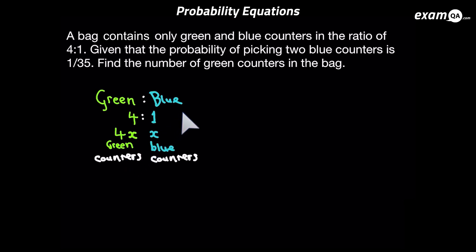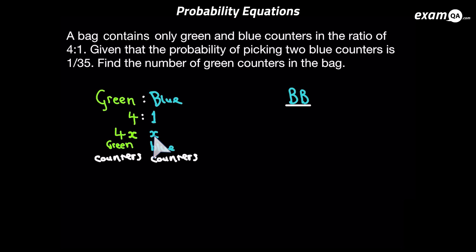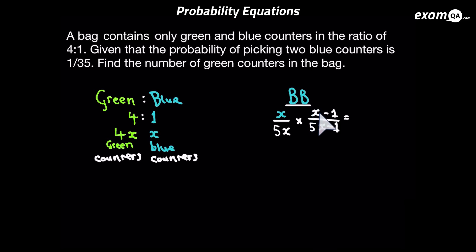Remember, with all these probability equations we need to be talking about amount of counters. Since the question has told us the answer for picking two blue counters, we're going to make an equation about that. We need to pick a blue counter first — there's x amount of blue counters, and the total is 4x plus x which is 5x. So the probability of picking the first blue counter is x over 5x. Now we're picking another blue — there's going to be one less blue counter and one less total for the denominator. So we've got x minus 1 at the top and 5x minus 1 at the bottom. From the question, we know this is equal to 1 over 35. And we've got our probability equation.